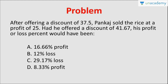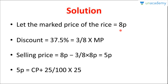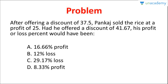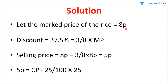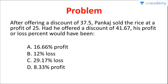This question becomes simple when we assume the marked price as 8P. For this, you need to be very well aware of the conversion between percentages and fractions. If you had taken the marked price as 100, the discount would be 37.5 rupees, giving a selling price of 62.5 — making calculations heavy. That's why we use such tactics. Remember: 41.67% is also a fraction — convert it to 5/12 and the solution becomes easy.